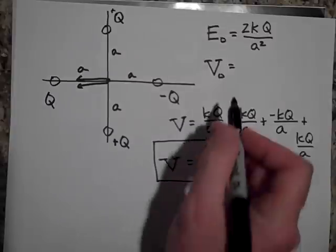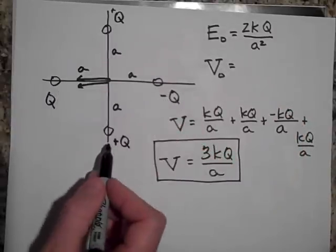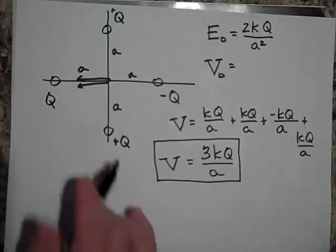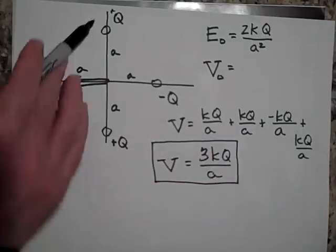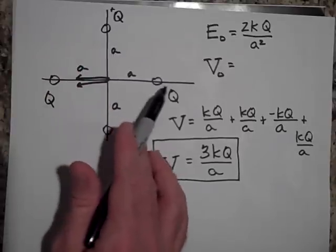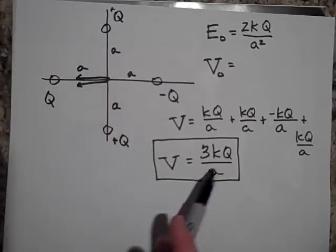So the question was, what is the voltage at the origin if this is Q, Q, negative Q, Q, and Q, and they're all the distance A from the origin. The way that you figure that is you just do KQ over A for this guy, then KQ over A, then negative KQ over A because there's a negative Q there, and then positive KQ over A, and you get 3KQ over A.